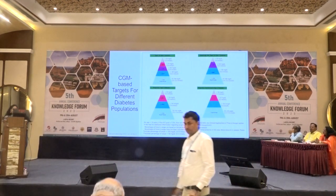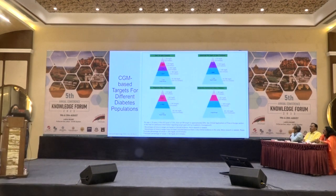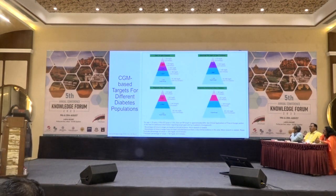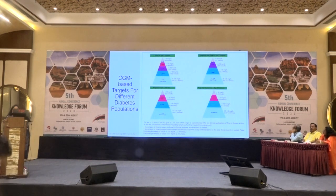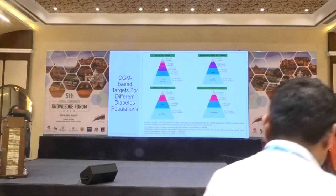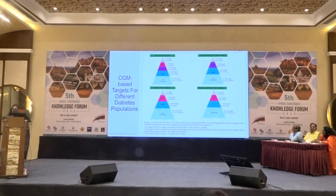This pyramid shows CGM-based targets for different diabetic populations: Type 1 and Type 2, older high-risk Type 1 and Type 2, pregnancy with Type 1 diabetes, and gestational and Type 2 diabetes. For patients above 25 years, the A1c goal is 75% and the set TIR target is approximately 60%.